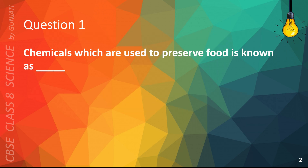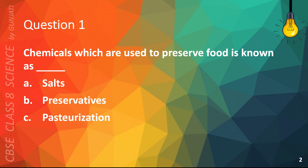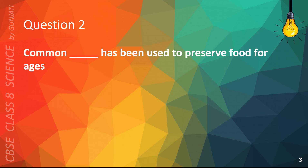Question 1. Chemicals which are used to preserve food are known as: A. Salts, B. Preservatives, C. Pasteurization, D. None of the above. The correct answer is B. Preservatives.